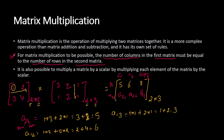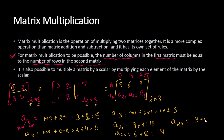Similarly, a21 is row 2 × column 1: 3×3 + 4×1 = 9+4 = 13. A22 is row 2 × column 2: 3×2 + 4×2 = 6+8 = 14. A23 is row 2 × column 3: 3×1 + 4×1 = 3+4 = 7. So the resulting matrix is [5, 6, 3; 13, 14, 7]. This method of generalizing elements ensures you never get confused about which row to multiply with which column.